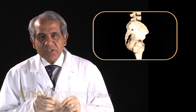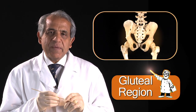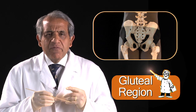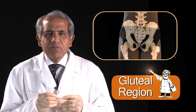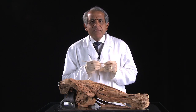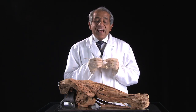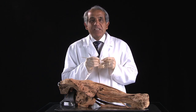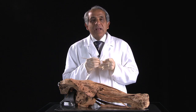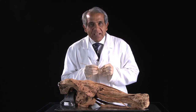The gluteal region lies on the posterolateral aspect of the hip bone. It is occupied by very powerful, large muscles, and several important nerves and vessels traverse this area. In the depths of this gluteal region is that other important gateway known as the greater sciatic foramen, which we shall see by and by.